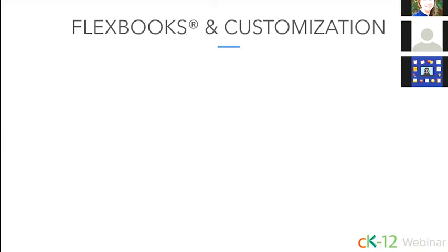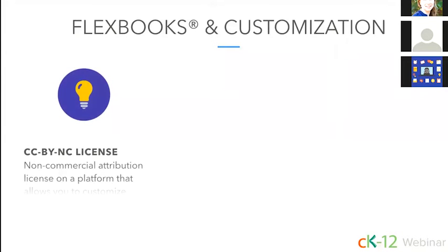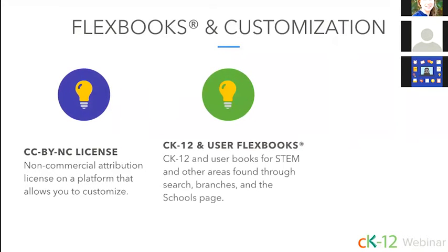Now that you've seen our concept pages and the difference between our interactives, let's take some time to talk about our science Flexbooks and the ways you might want to customize content to tailor it to your class. The three pieces we'll go through are: first, our license — we're licensed under Creative Commons CC BY-NC licensing; second, both CK-12 and user-created Flexbooks, particularly for STEM; and third, customizing these books.